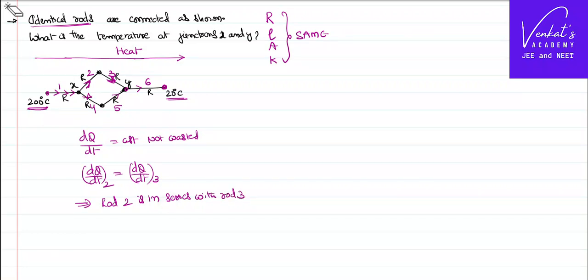Same is the case of 4 and 5. Rod 4 is in series with rod 5. When they are in series, we know resistance in series is similar to electric resistance, thermal resistance is also R1 plus R2. So both are R. So the resistance of that combination is 2R.